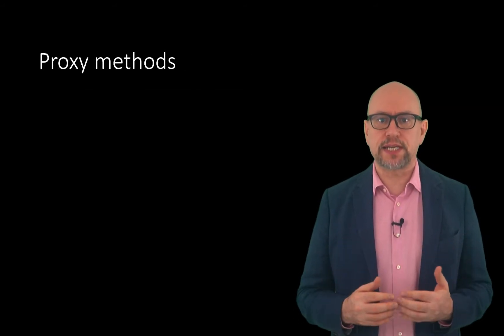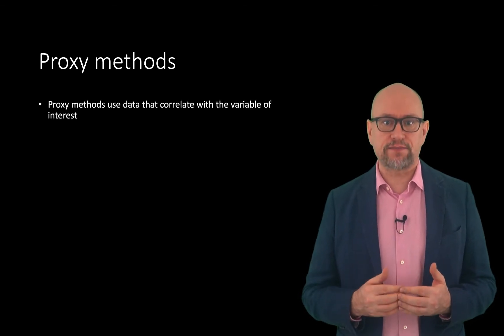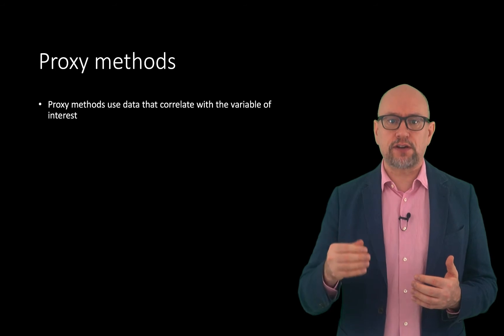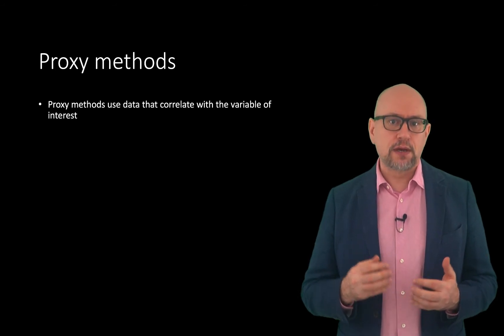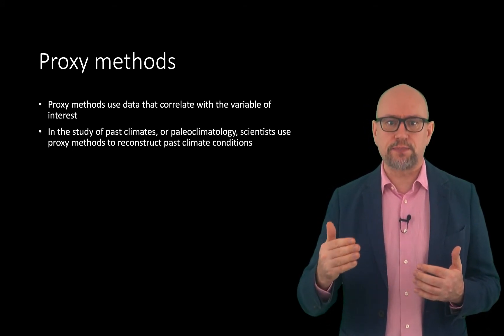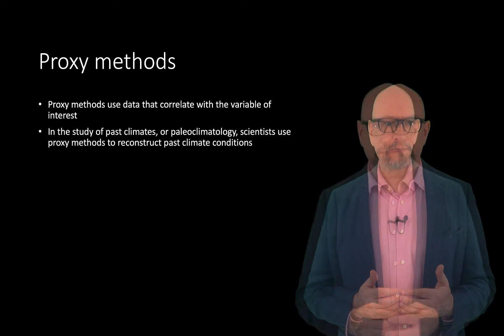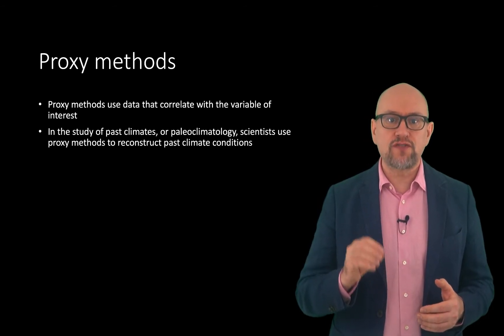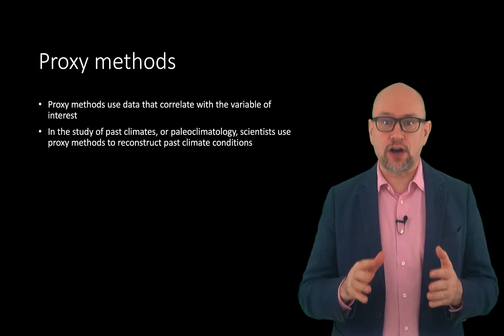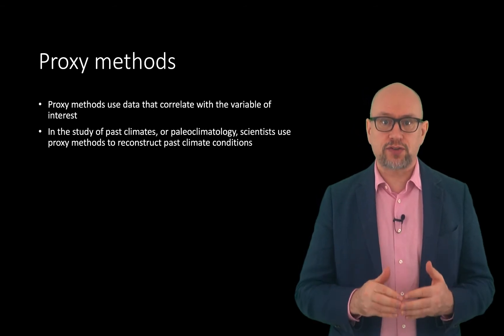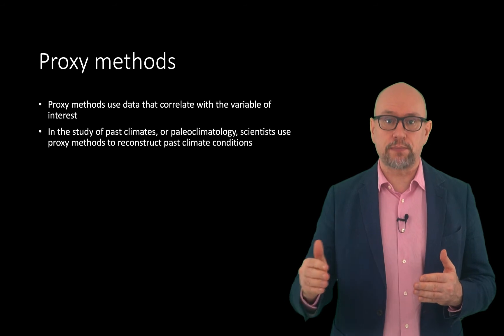In science, it is sometimes necessary to study a variable which cannot be measured directly. This can be done by proxy methods, in which a variable which correlates with the variable of interest is measured and then used to infer the value of the variable of interest. Proxy methods are of particular use in the study of past climate, beyond times when direct measurements of temperature are available. Most proxy records have to be calibrated against independent temperature measurements or against a more directly calibrated proxy during their period of overlap to estimate the relationship between temperature and the proxy. The longer history of the proxy is then used to reconstruct temperature from earlier periods.